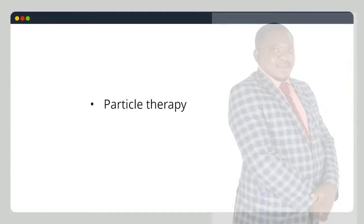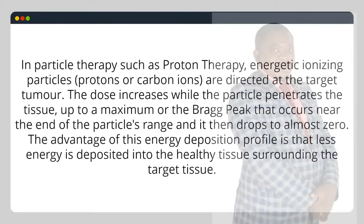Particle therapy. In particle therapy such as proton therapy, energetic ionizing particles — protons or carbon ions — are directed at the target tumor. The dose increases while the particle penetrates the tissue, up to a maximum at the Bragg peak that occurs near the end of the particle's range, and it then drops to almost zero. The advantage of this energy deposition profile is that less energy is deposited into the healthy tissue surrounding the target tissue.